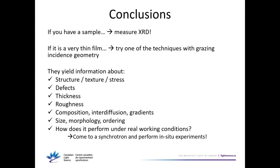Conclusions: if you have a sample, you have to do XRD. If it's a very thin film, you likely want to do it in grazing incidence geometry so you're more sensitive to the surface. With these techniques you get information about thickness, roughness, porosity, density, strain, and many more.